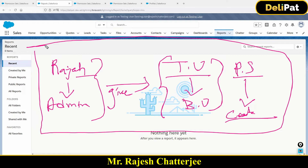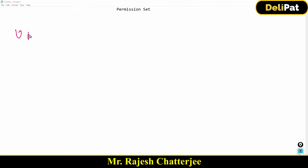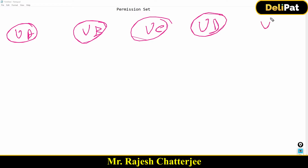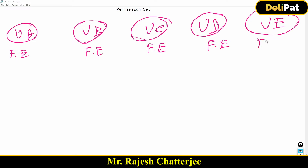Let me clarify this again with an example, which is very important. After the example, I'm going to ask you a question to check whether you answered correctly. Let's say we have five users: User A, User B, User C, User D, and User E. Every single user has the same profile — let's say 'Floor Executive.' All five users have the same profile, so they have the same level of access.